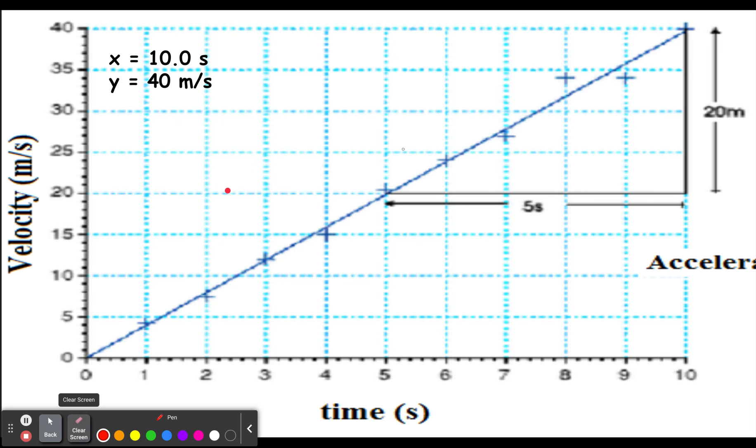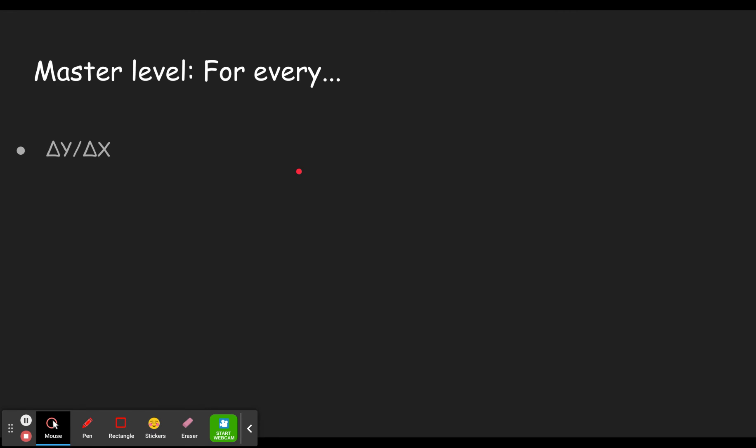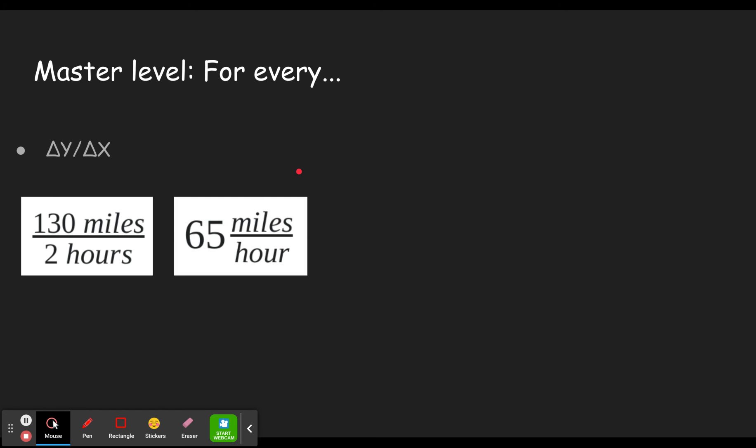All right, so that's how you do the first level, the apprentice level, which was titled calculating slope. The next level is called 'for every dot dot dot,' and the basic idea is it's trying to help make sure you understand what a slope is. When you see a slope, what does it mean? Okay, and so if you have something like 130 miles per hour, or 130 miles in 2 hours, which we can calculate to 65 miles per hour, we talked about that earlier. This is telling you that the thing will go 65 miles in 1 hour.